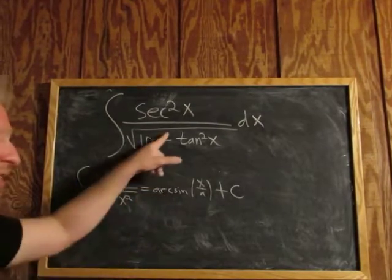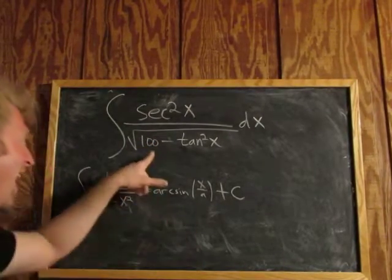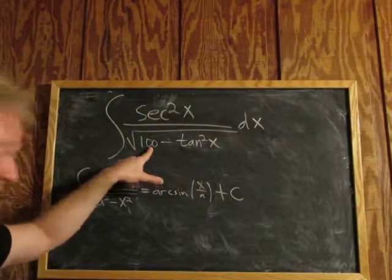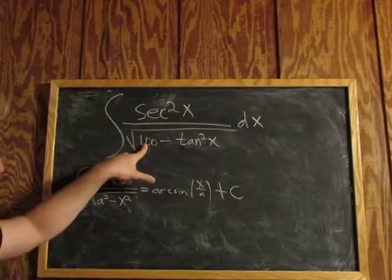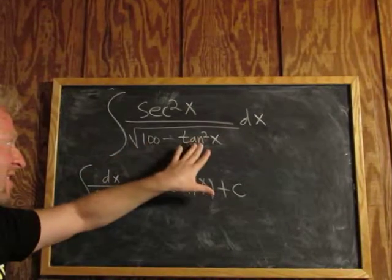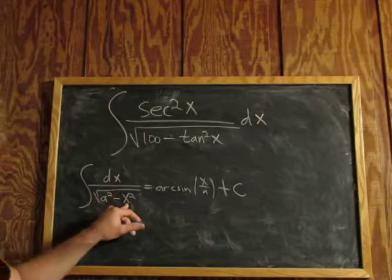So how do you know to do that? Well, you see the funny square root, that's a problem, and you see a number which is the square of 10, right? 10 squared is 100. That's our a squared, so a is 10 here. And you see this tangent being squared here, that's kind of like your x squared.